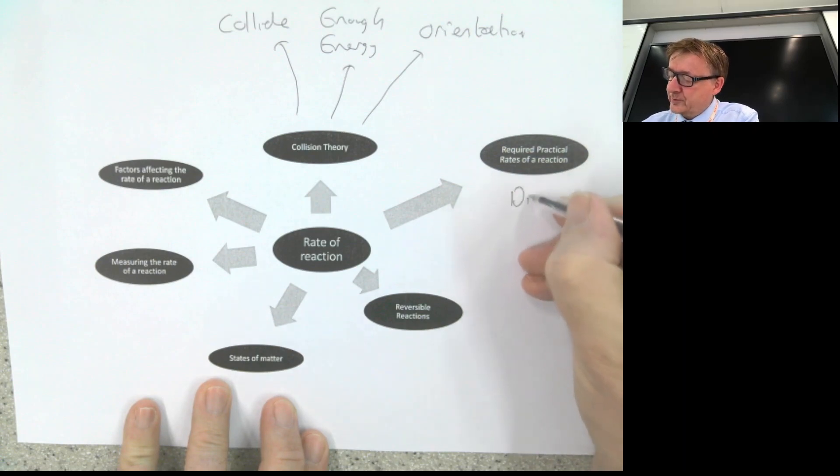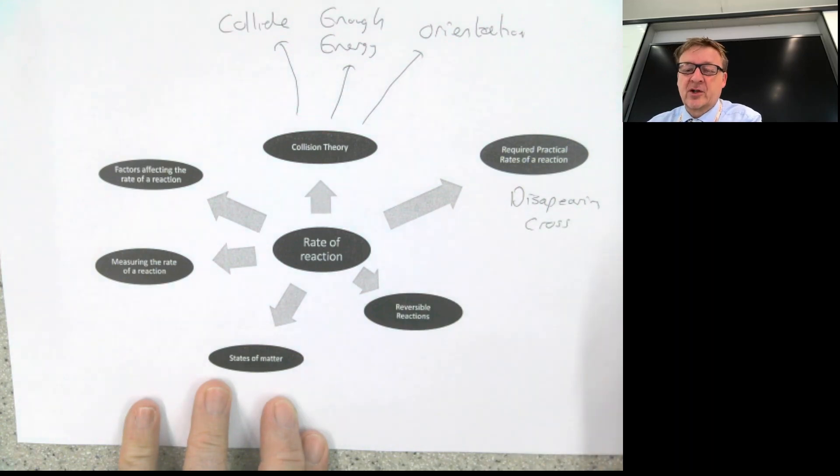The required practical is the disappearing cross. That's where you've got a conical flask, you look from above and you've got a cross underneath. And a precipitation appears that then makes the solution cloudy.